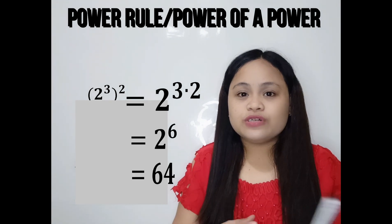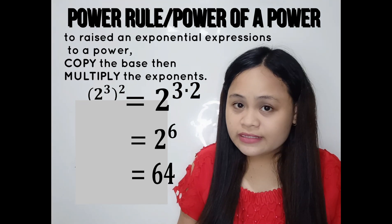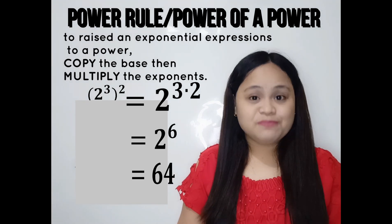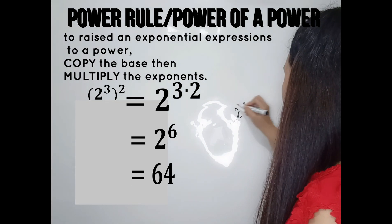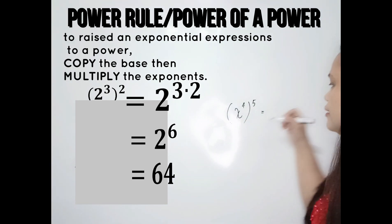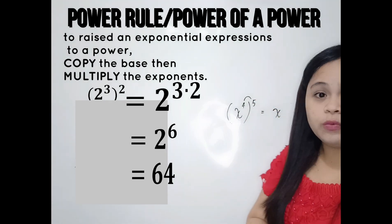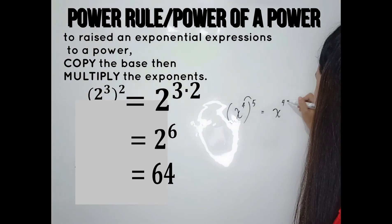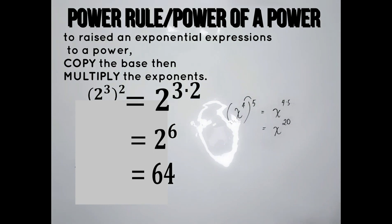Power rule states that to raise an exponential expression to a power, just copy the base and multiply the exponents. Another example: suppose we have x to the power of 4, and this expression is raised to 5. Just copy the base — that is x — and then multiply the exponents: 4 times 5. Simplifying this, we have x raised to 20, and that is our answer.